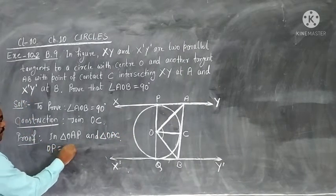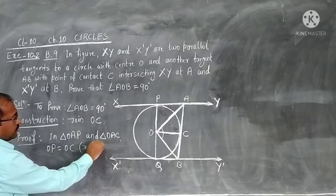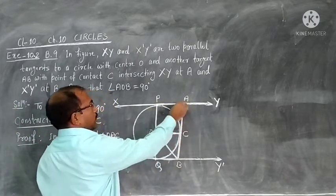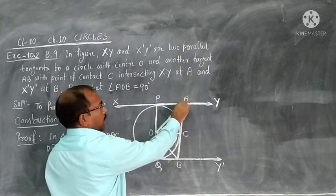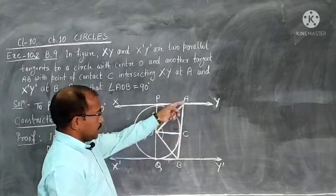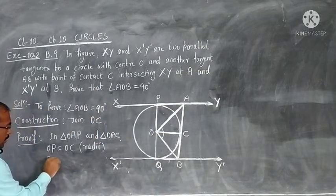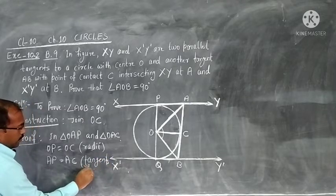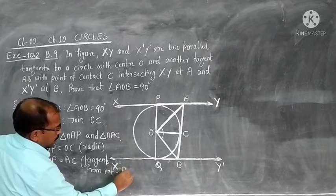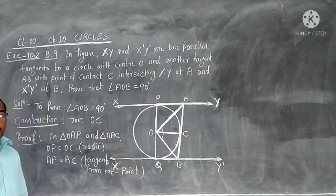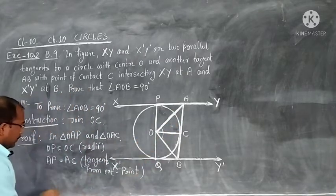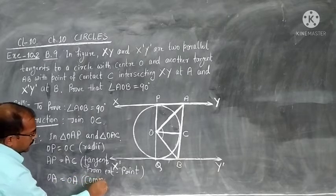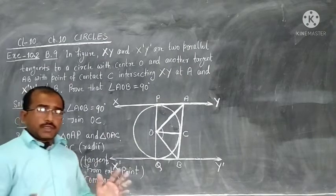We can say OP equals OC, as they are radii of the same circle. Then, tangents from an external point to a circle are equal, so AP and AC are both tangents from external point A, meaning AP equals AC. Also, OA is common to both triangles, so OA equals OA. Three corresponding sides are equal, so by SSS the triangles are congruent.